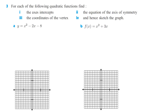Hello, this is Mr. Stansberry. I'm going to take you through the 9j assignment. We'll start with number 3. For each of the following quadratic functions, find the axis intercepts, equation of the axis of symmetry, the coordinates of the vertex, and sketch the graph.